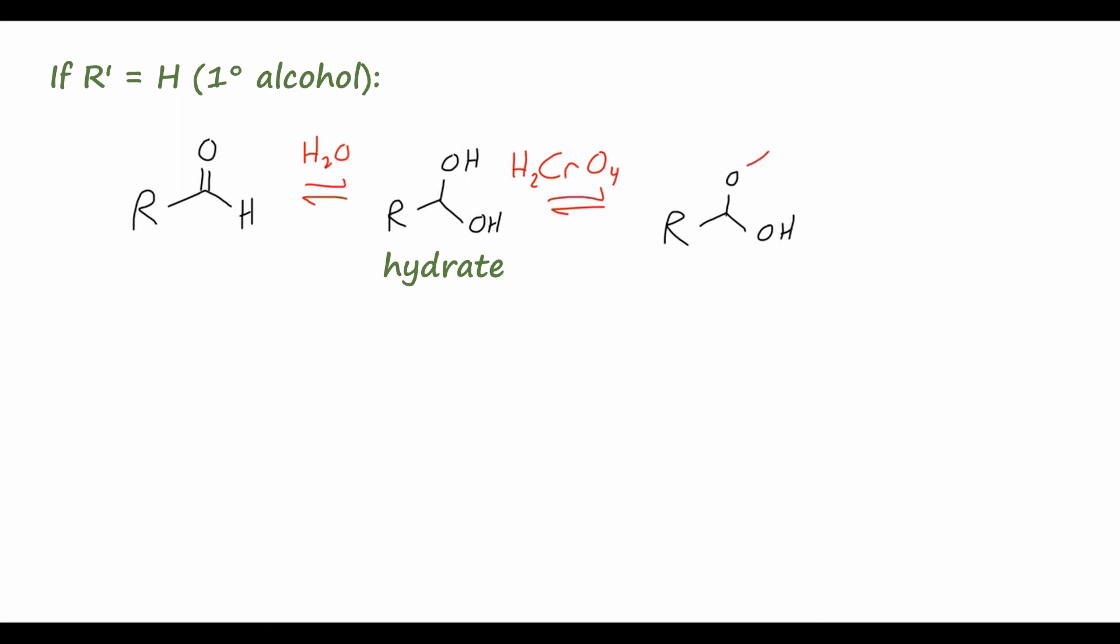So just like before, we'll have another molecule of water come in, pull off that hydrogen, forming the double bond to oxygen, and kicking off the CrO4 compound to actually give a carboxylic acid instead of the aldehyde. It's very difficult to stop the Jones oxidation at the aldehyde stage before it over-oxidizes to the carboxylic acid, so that is something to keep in mind.